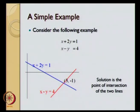Let us consider a simple example. The simple example that we are going to consider is x plus 2y equal to 1, that is the first equation, and x minus y equal to 4, that is the second equation.